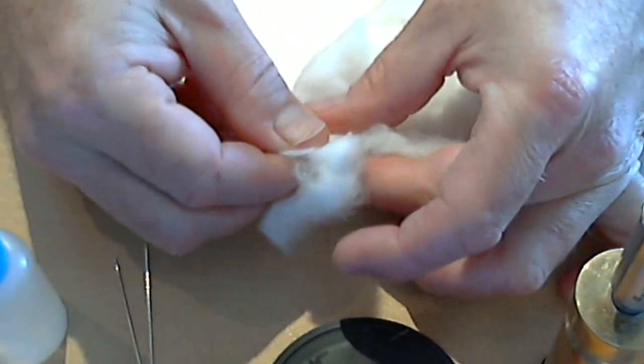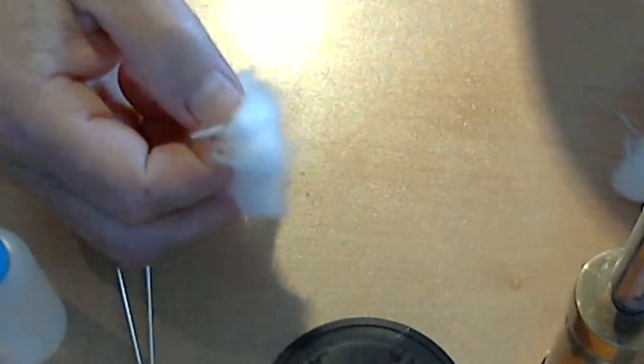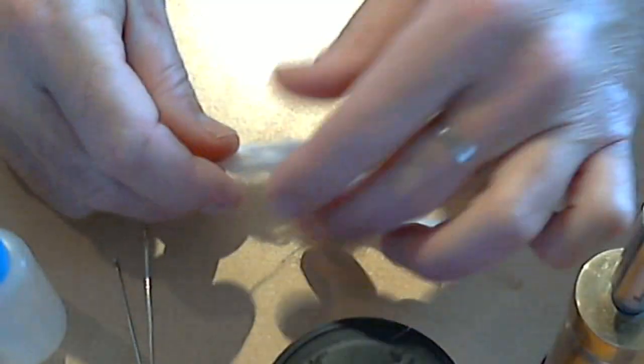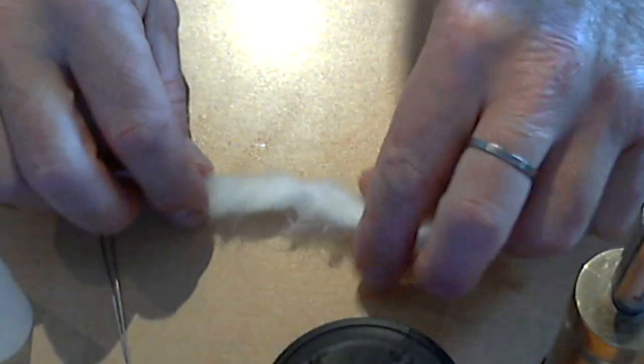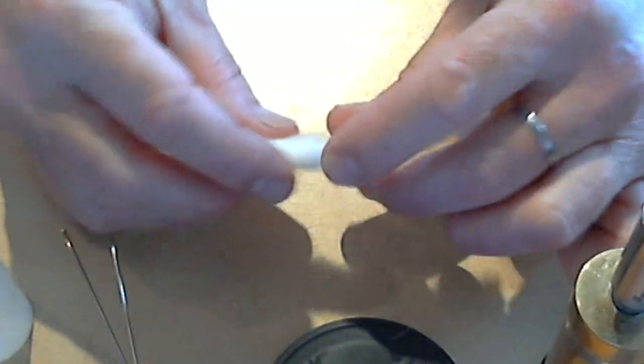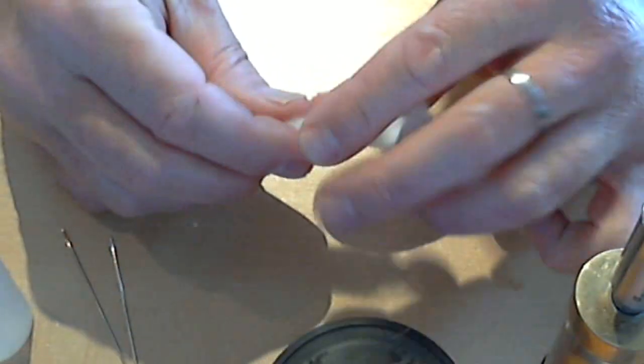You want to try and get like a consistent thickness all the way through. Something like that. Peel out the fluffies. That looks like it's even going to be too big.